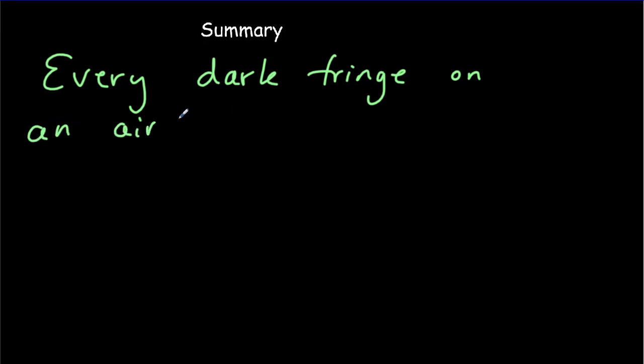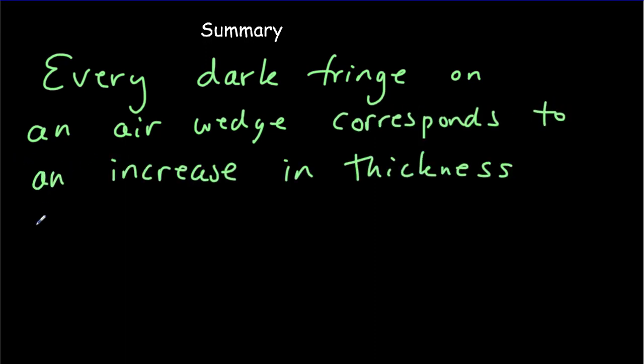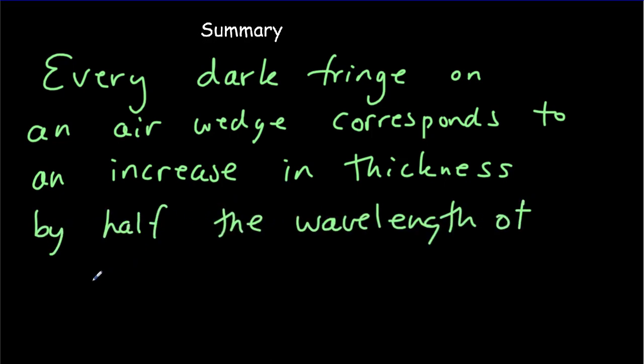We can summarize this video very quickly simply by saying that every dark fringe on an air wedge surface, or simply on an air wedge, corresponds to an increase in thickness by half the wavelength of the light used.